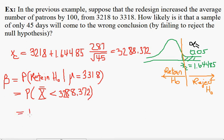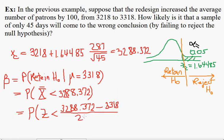Now we convert to standard units and use the bell curve. So we get the probability that a standard normal random variable would be less than 3288.372 minus the new mean of 3318 divided by 287 over the square root of 45.